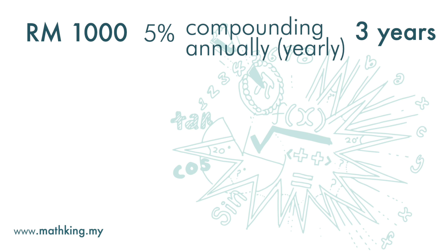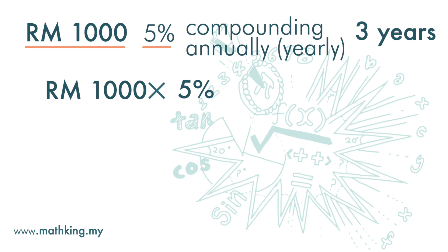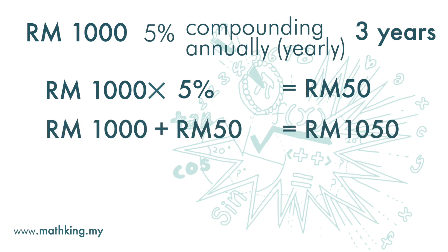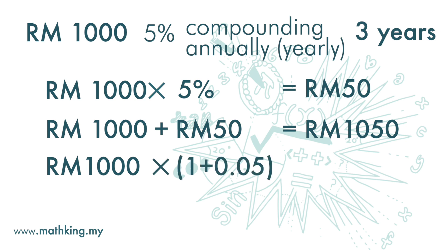So your principal is 1,000, and we multiply it by 5%. So by the end of the year, the interest you get is 1,000 times 5%, which is RM50. So after one year, your money becomes 1,050. We can get that by multiplying the principal amount of 1,000 by 1 plus 0.05, which gives us 1,050.